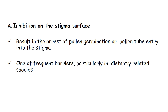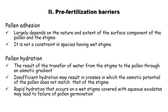Pollen adhesion largely depends on the nature and extent of surface components of the pollen and stigma; it is not a constraint in species having wet stigma. Pollen hydration results from transfer of water from stigma to pollen through an osmotic gradient. Insufficient hydration may occur when the osmotic potential of pollen does not match that of the stigma, and rapid hydration on a wet stigma covered with aqueous exudate may lead to failure of pollen germination.